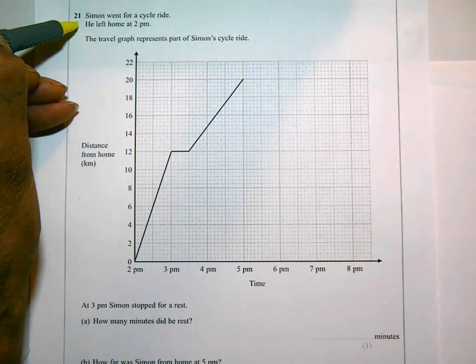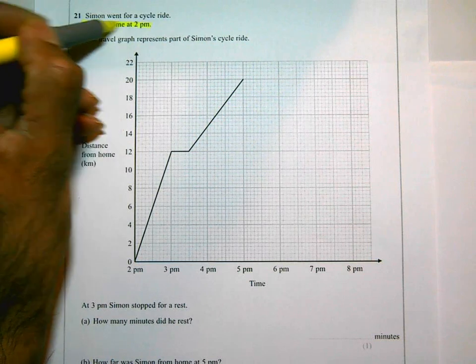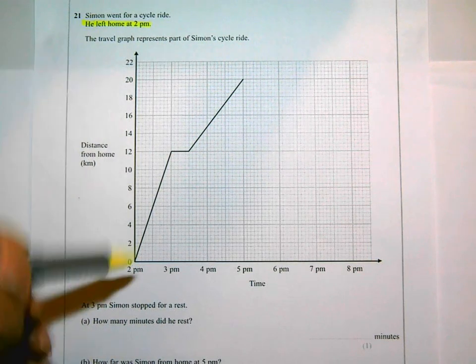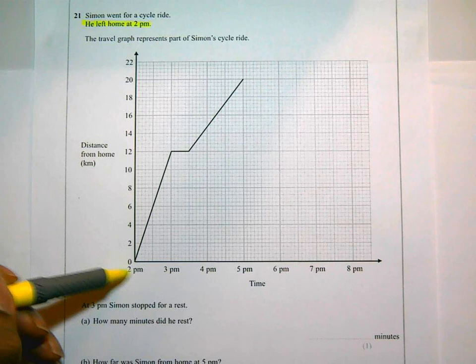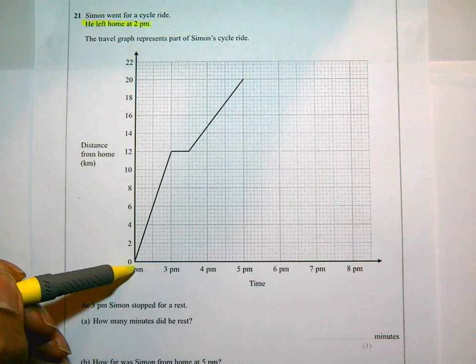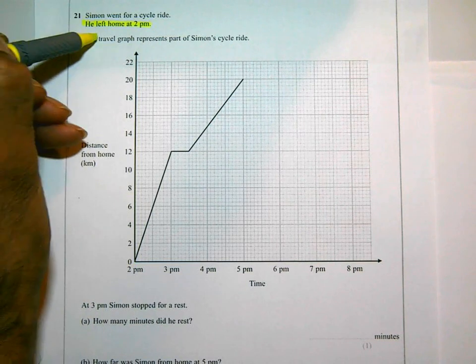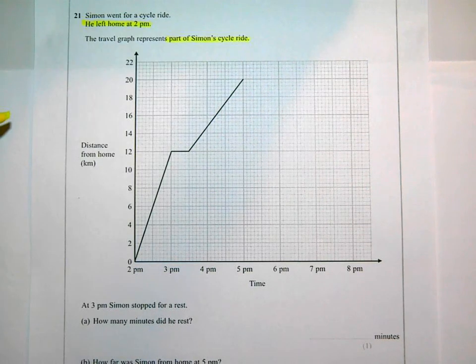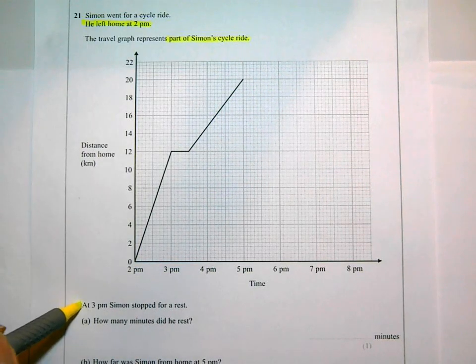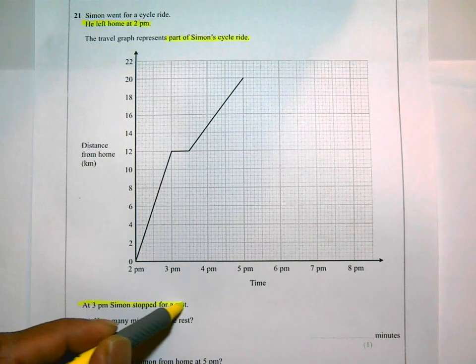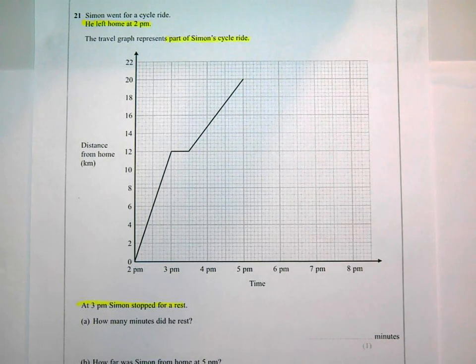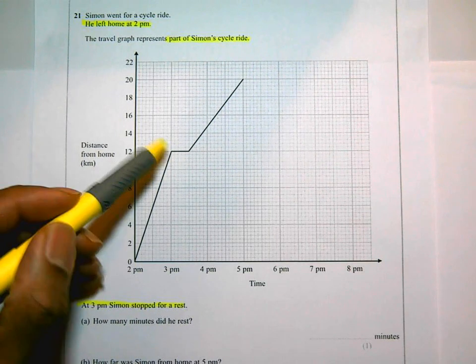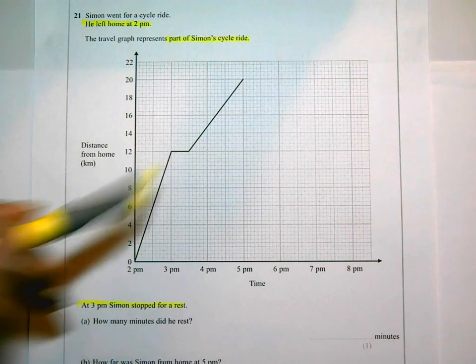Simon went for a cycle ride. He left home at 2 p.m. So actually looking at the graph it says here 2 p.m., that's when it started. The travel graph represents part of Simon's cycle ride. At 3 p.m. Simon stopped for a rest. So he stopped for a rest at 3 p.m. There's 3 p.m. and there I can see, yep, he has stopped. It's flat over there.